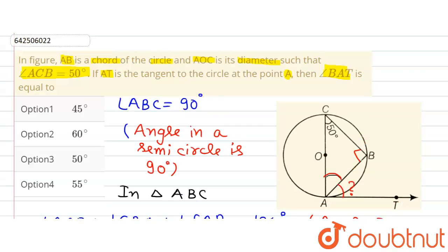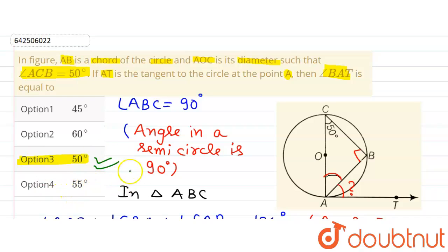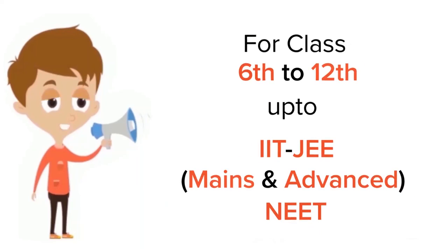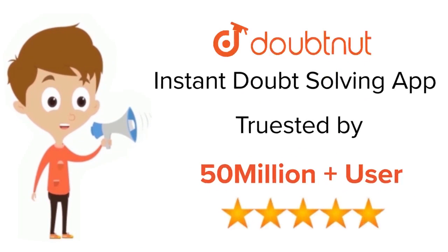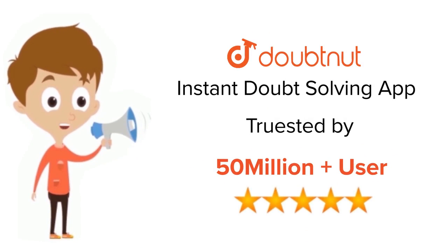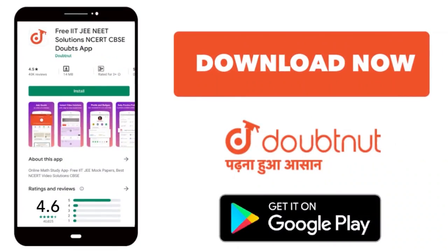Let's check the options. Option 1 says 45 degrees — not correct. Option 2 says 60 degrees — not correct. Option 3 says 50 degrees — this is the correct answer. Option 4 says 55 degrees — also not correct. That's all, thank you. For class 6 to 12, IIT JEE and NEET level — trusted by more than 5 crore students. Download Doubtnut today.